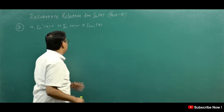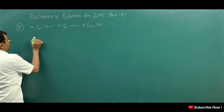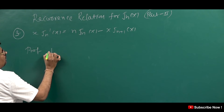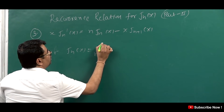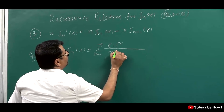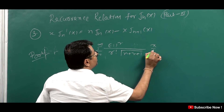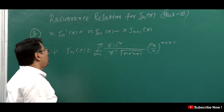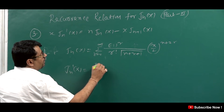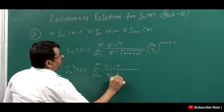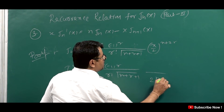So students, let us check out the recurrence relation and how to prove it. We will see here J_n(x), where J_n(x) equals the summation r = 0 to infinity of [(-1)^r / (r! · Γ(n + r + 1))] · (x/2)^(n+2r). Now we will differentiate J_n(x) with respect to x, giving a factor of (x/2)^(n+2r) differentiated, which brings down a power of (n + 2r).